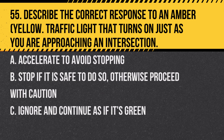Question 55. Describe the correct response to an amber (yellow) traffic light that turns on just as you are approaching an intersection. A. Accelerate to avoid stopping. B. Stop if it is safe to do so, otherwise proceed with caution. C. Ignore and continue as if it's green. Answer: B. Stop if it is safe to do so, otherwise proceed with caution. The yellow light is a warning that the light will soon turn red.